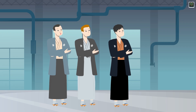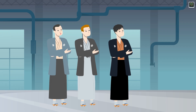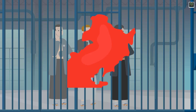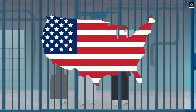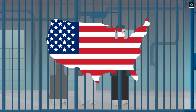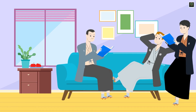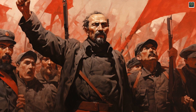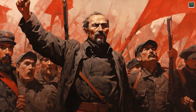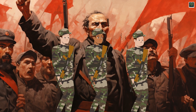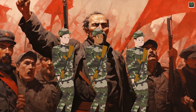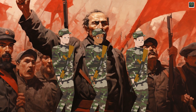Instead, potential leaders were scattered as exiles in various places such as China, Manchuria, Japan, the USSR, and the United States. These individuals fell into two main groups. The first group comprised committed Marxist revolutionaries who had fought against the Japanese as part of the Chinese-dominated guerrilla armies in Manchuria and China.